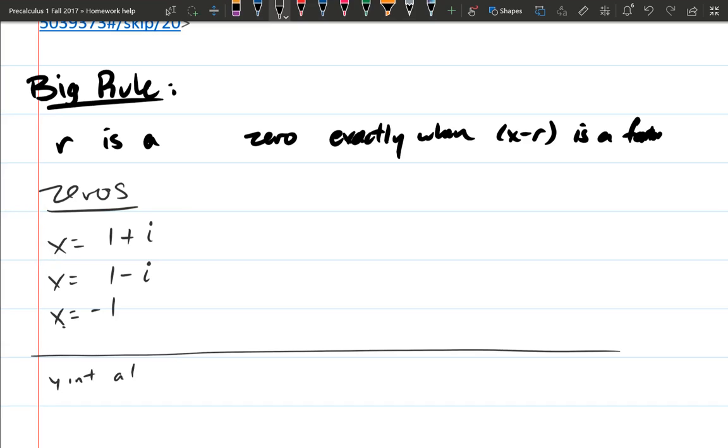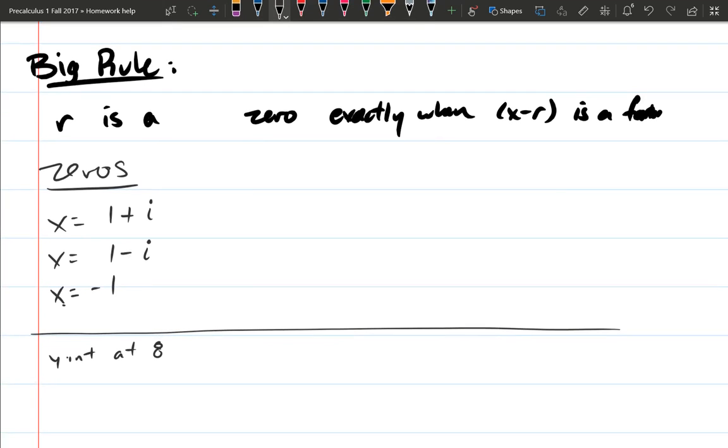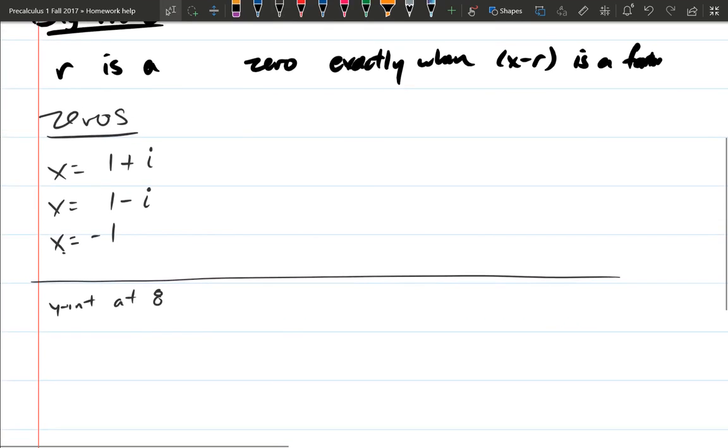So y-intercept, it just says at 8. Let's be a little bit more careful with our notation. What that means is if you plug in zero, you're going to get out 8. What that would look like on a graph is your y-intercept would be up here at 8. So when your x-coordinate is zero, your y-coordinate will be 8. So in function notation, that means f of zero equals 8.